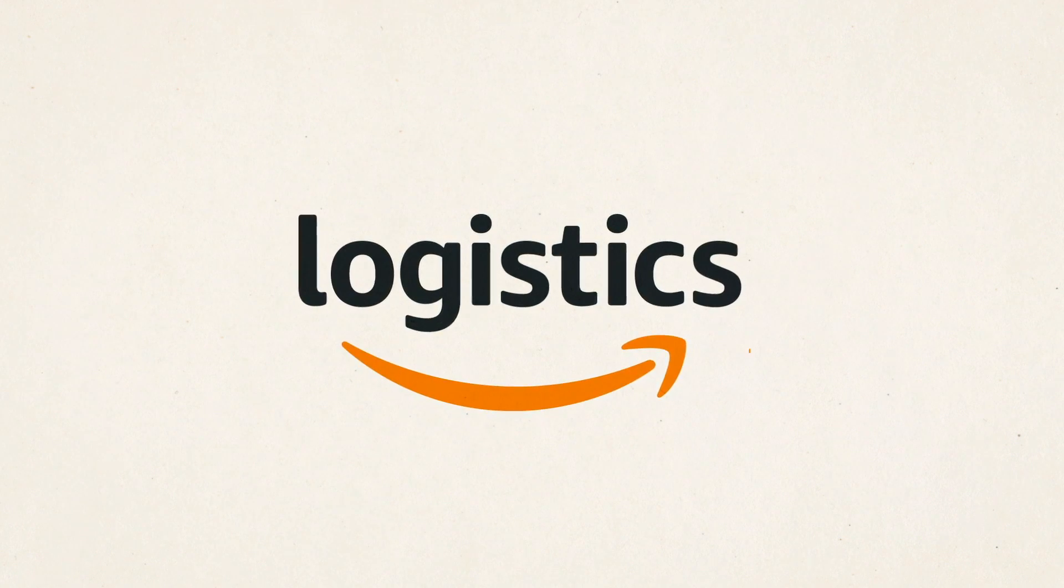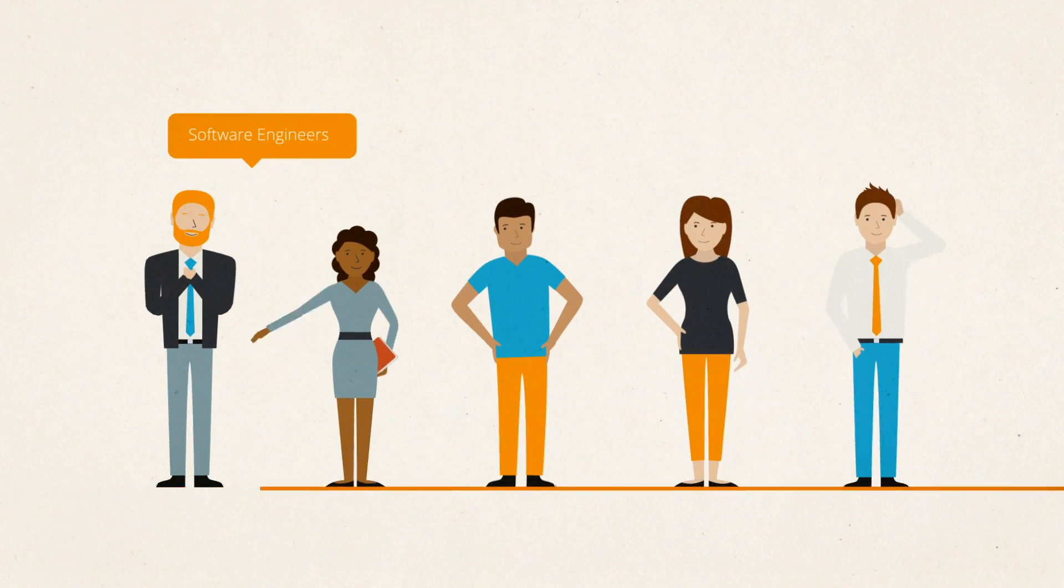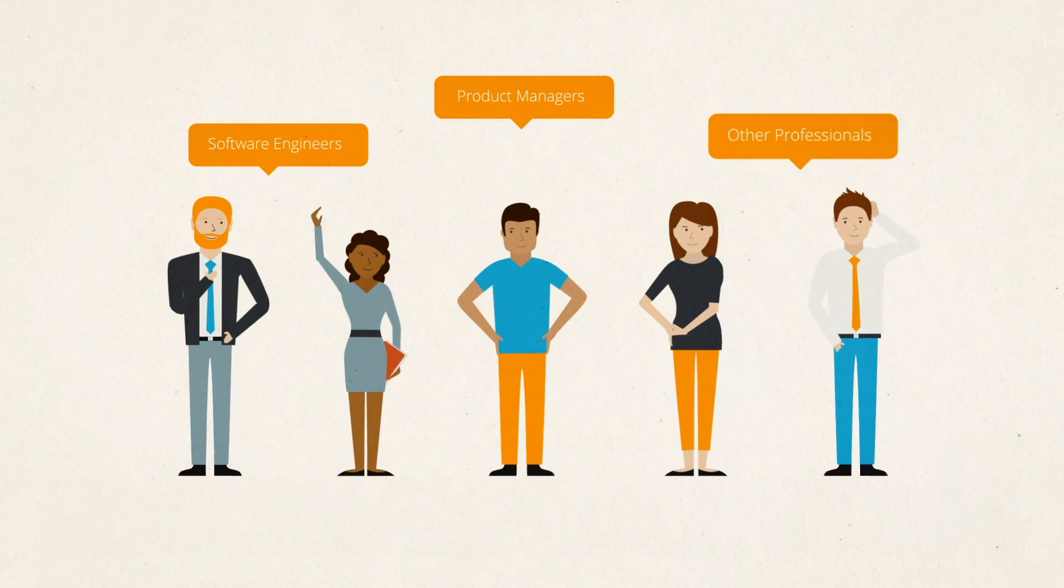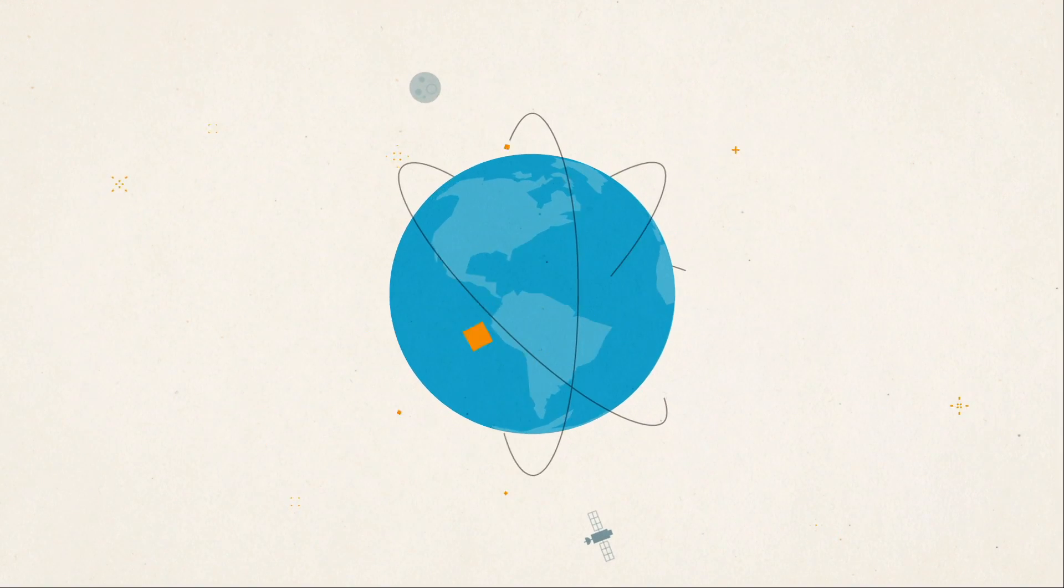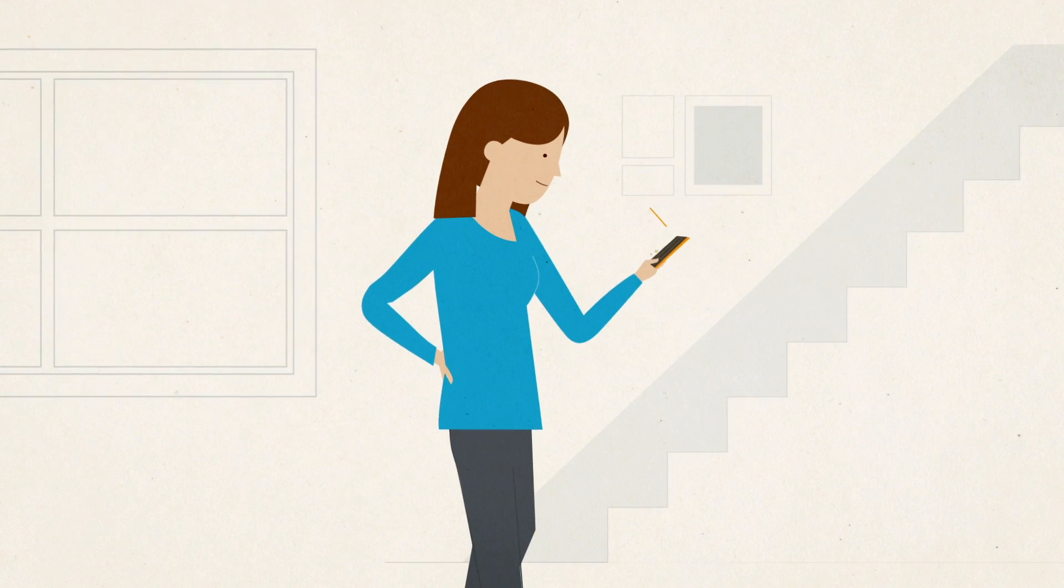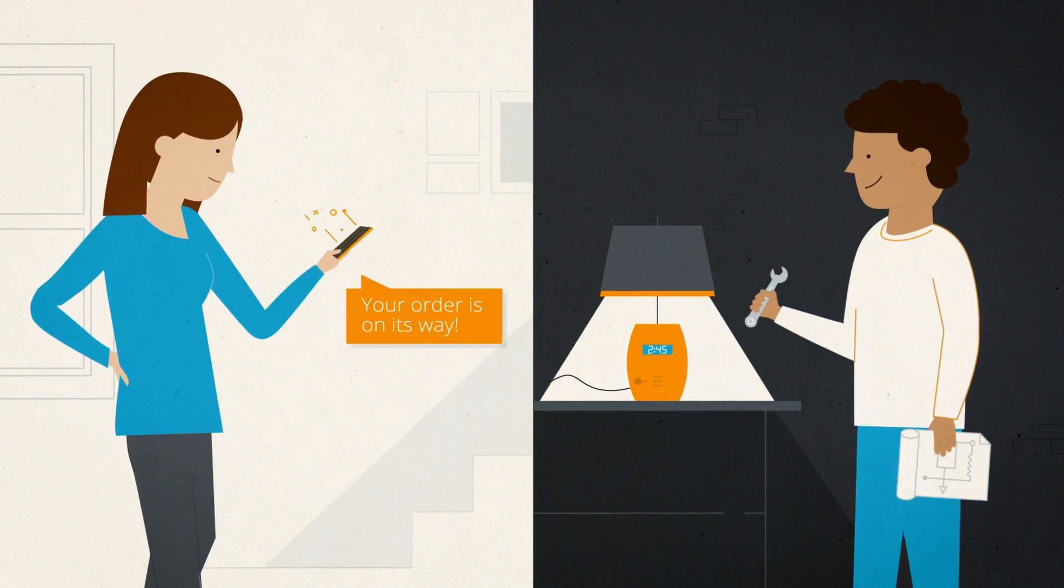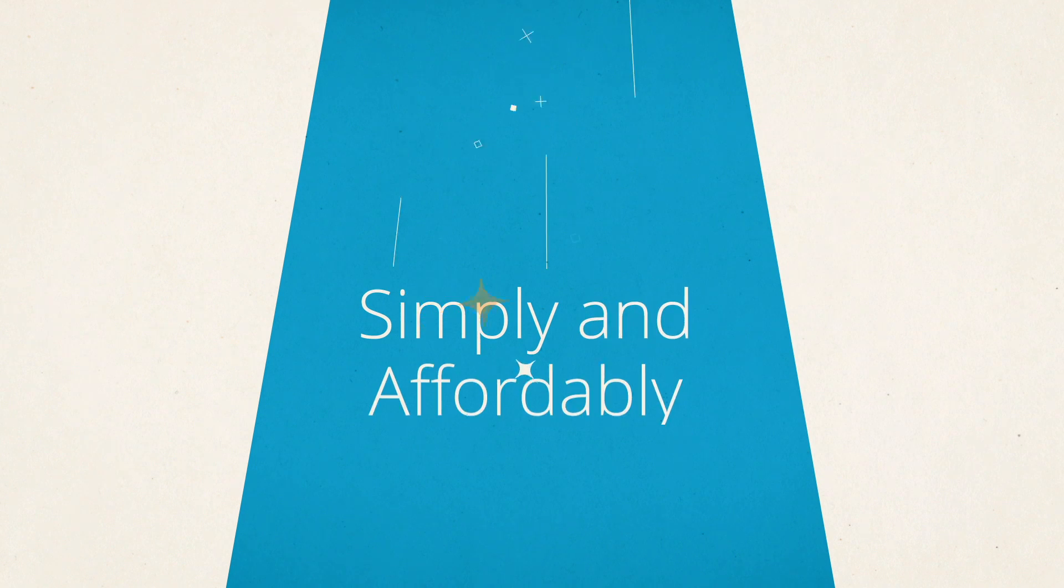At Amazon Global Logistics, we're building a team of software engineers, product managers and other professionals to reinvent how products move around the globe. Imagine what would be possible if buyers could purchase items from sellers on the other side of the world, and then receive those items within hours, simply and affordably.